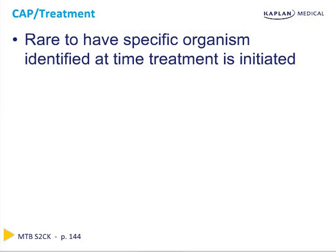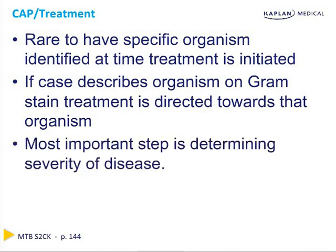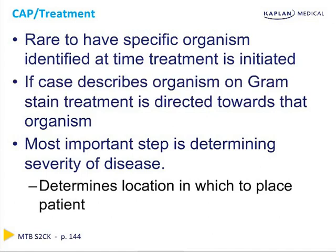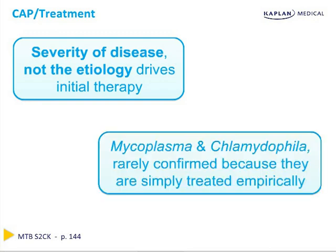Moving on to management of community-acquired pneumonia, it is rare to have a specific organism identified at the time treatment is initiated. However, if you do identify a certain organism on gram stain, you can narrow your antibiotics toward that particular organism. The most important step in determining management is to determine the severity of the disease, which tells you whether to treat the patient in the hospital or as an outpatient and also drives the initial therapy. Remember that Mycoplasma and Chlamydia are rarely confirmed because they're usually just treated empirically — they get better with first-line community-acquired pneumonia antibiotics.